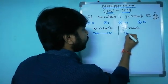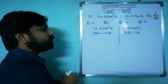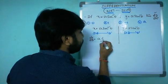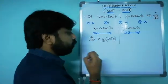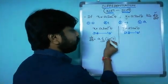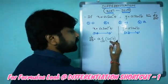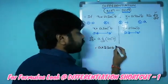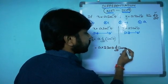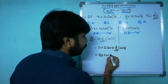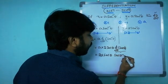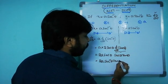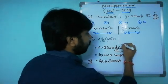For dx/dθ: applying d/dθ of sec²θ — there's no direct formula, so treat sec θ as a variable u, giving derivative 2u, then by chain rule multiply by d/dθ of sec θ, which is sec θ·tan θ. So dx/dθ = 2a·sec θ·(sec θ·tan θ) = 2a·sec²θ·tan θ.